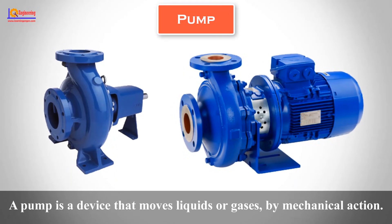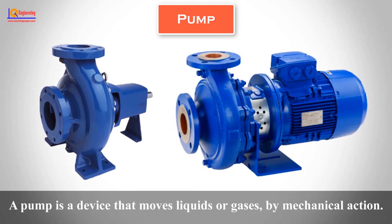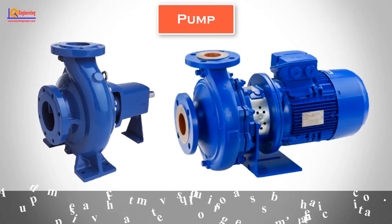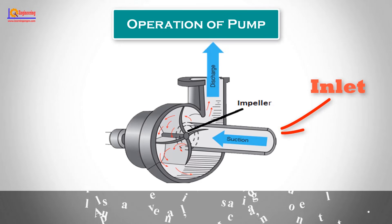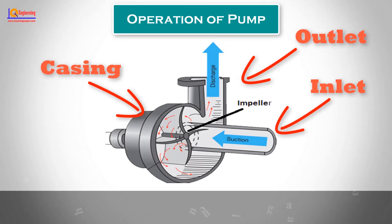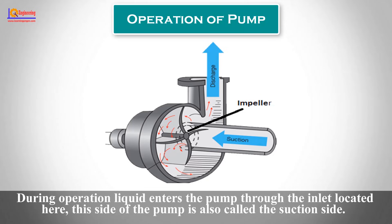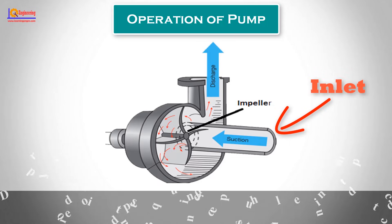A pump is a device that moves liquids or gases by mechanical action. All pumps have an inlet, a casing, and an outlet. During operation, liquid enters the pump through the inlet located here. This side of the pump is also called the suction side.